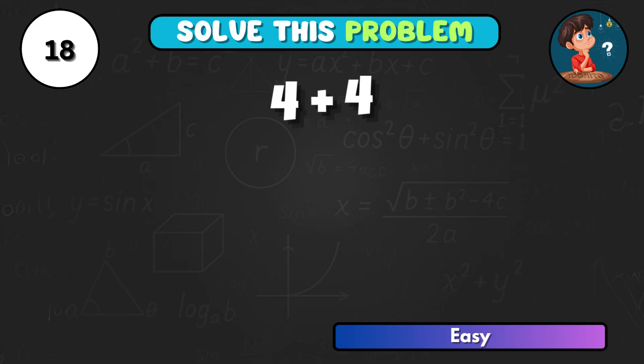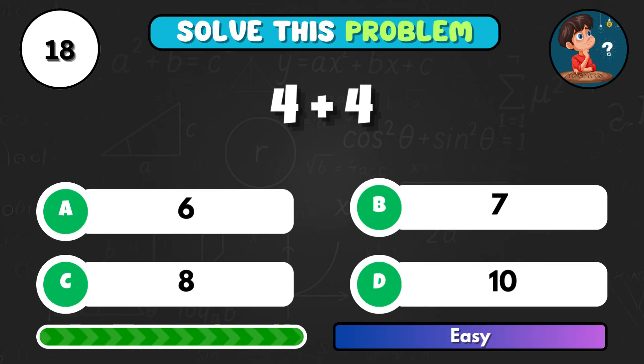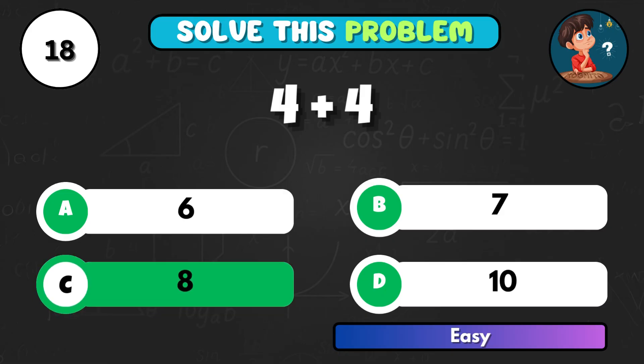4 added to 4. What total do you get? Correct choice C, making 8.